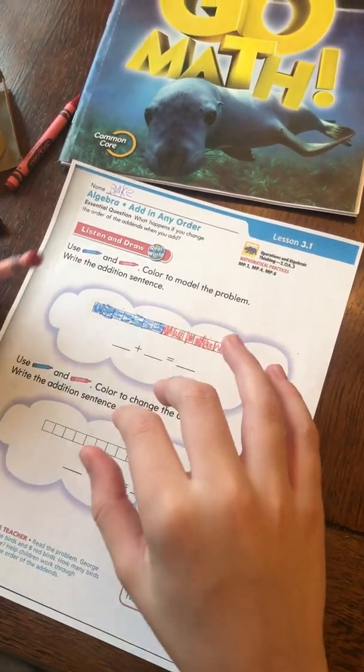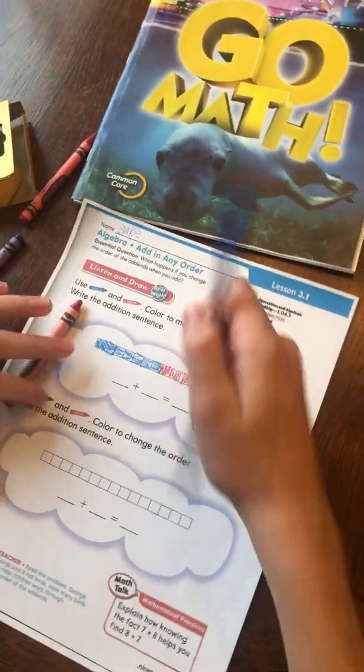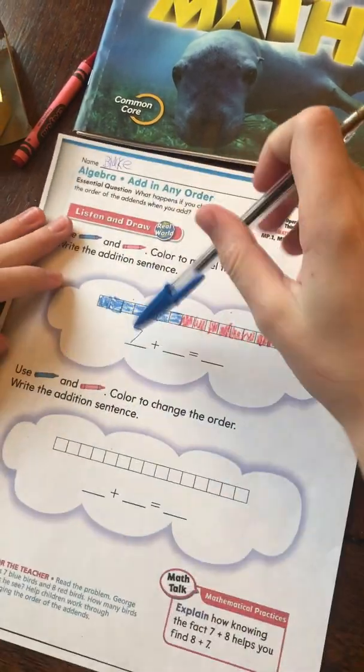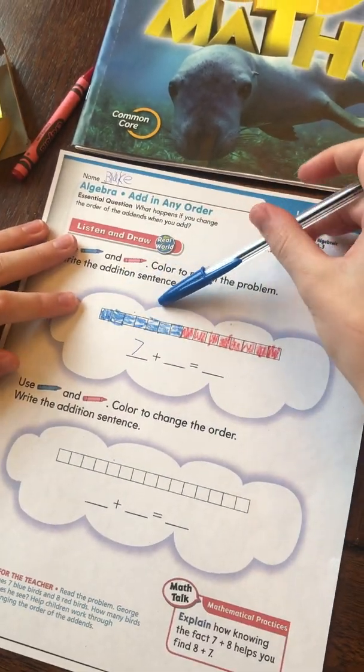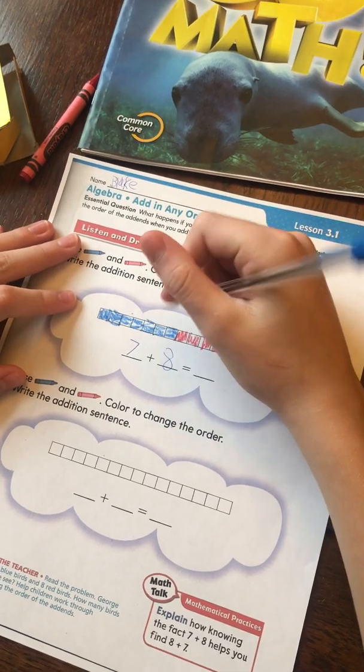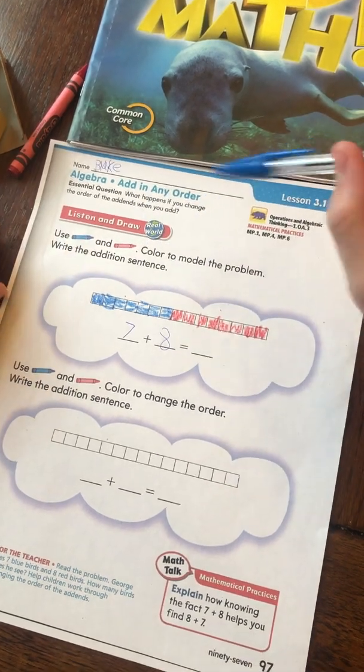So, if we wrote that out, it would be... Use your pencil. Yeah, or pen. It would be 7. Why'd you put 7? Because there were 7 blue birds. Oh, okay. Plus what? 8. Why'd you put 8? Because there were 8 blue birds. Or... 8 red birds.